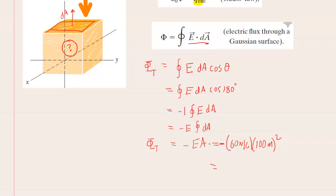And we get negative 600000. We can see the unit is newton meters squared per coulomb. That's the flux at the top surface.